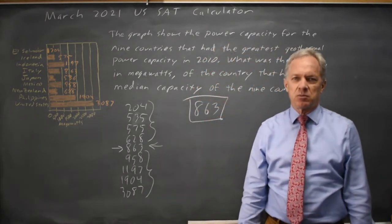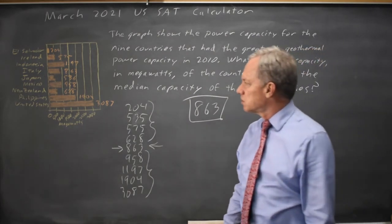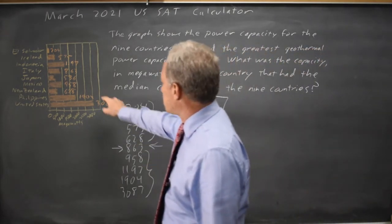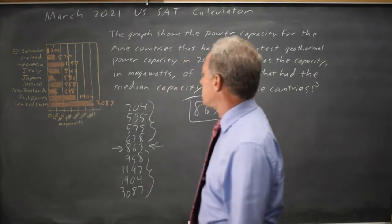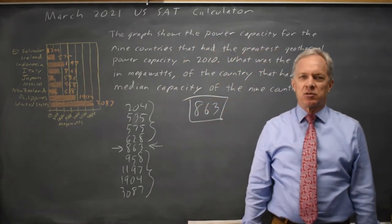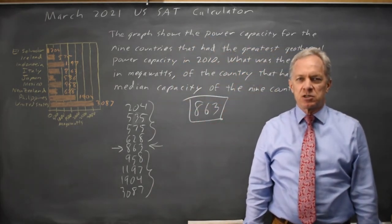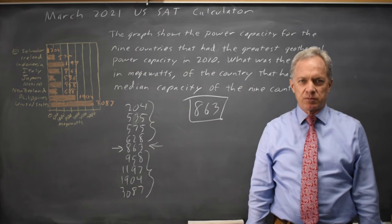So that's the median number, the middle number when they're listed in order. And I have copied it correctly from the bar chart so that is the answer they're looking for.